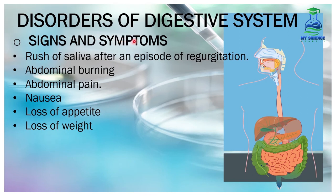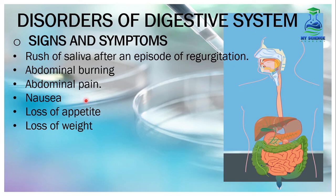Signs and symptoms of ulcer: Number 1, rush of saliva after an episode of regurgitation — regurgitation means the spit-up of food from the esophagus or stomach without nausea; rush of saliva means excessive saliva in the mouth. When gastric juice or food moves backward toward the mouth instead of forward, and excessive saliva is produced, that is a symptom of ulcer. Number 2, abdominal burning. Number 3, abdominal pain. Number 4, nausea and vomiting. Number 5, loss of appetite. Number 6, loss of weight.